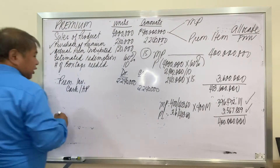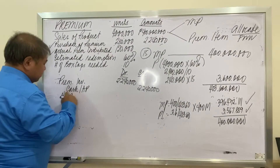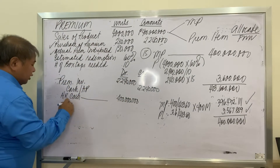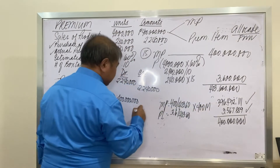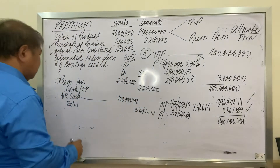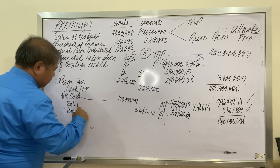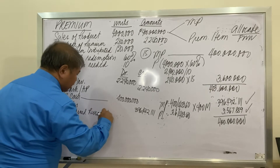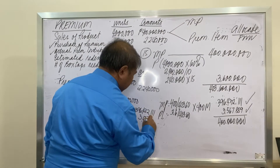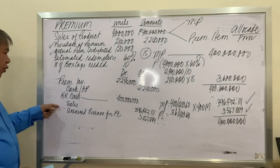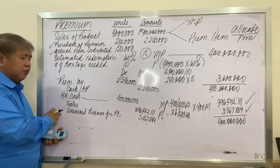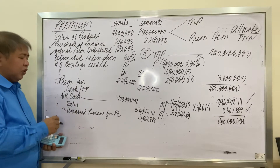The journal entry for the sale: debit accounts receivable or cash for 400 million; credit sales for 396,422,111 — the share of the main product — and credit unearned revenue for premium claims for 3,567,889. The 400 million sales is allocated between sales revenue and unearned revenue from premium claims. We will recognize the unearned revenue as revenue whenever there is actual redemption from customers.